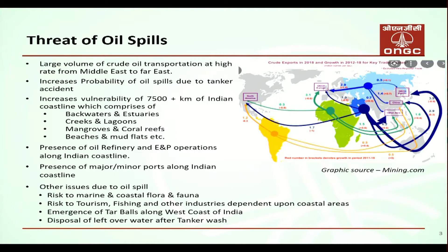A very pertinent question: what kind of threat does an oil spill come from? Some potential sources include large volumes of crude oil transported at high rates from the Middle East to the Far East. India has a coastline of almost 7,500-plus kilometers. Though we stand 18th in the world, the largest coastline belongs to Canada — almost 202,000 kilometers — followed by Indonesia at around 90,000 kilometers. The US comes at 8th position, China at 10th, and India at 18th.